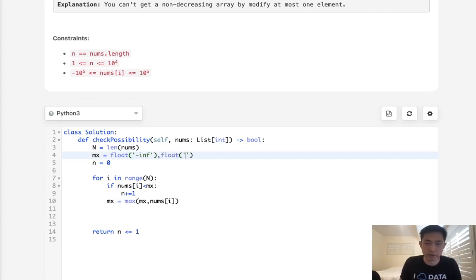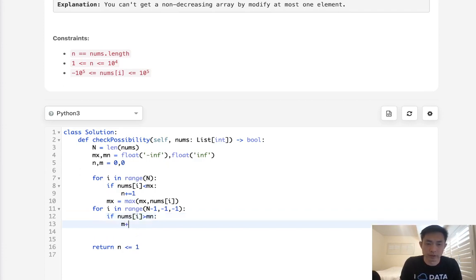What I'll do is also keep track of the min. This will be starting with infinite. And we'll say this is m. And we'll do the same algorithm, but we'll do it backwards. We'll say for i in range of n minus 1, minus 1, minus 1, if nums[i] is greater than the min so far, then we're going to increase our m. And the min will be the min of min and nums[i].